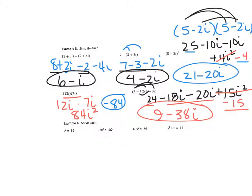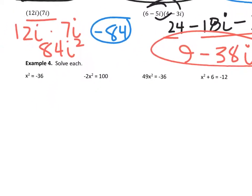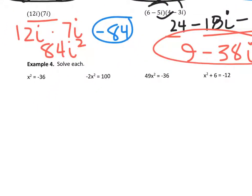We can also use imaginary numbers when solving quadratics. If I'm solving this quadratic, I want to use square roots. I already have x squared by itself, so I'm just going to take the square root of each side. Remember, it's going to be x equals plus or minus, because x squared can be positive or negative. The square root of negative 36 is 6i.